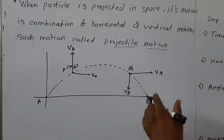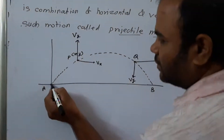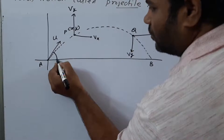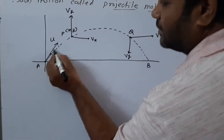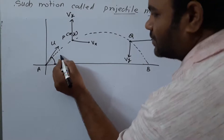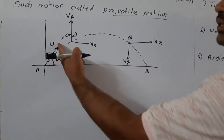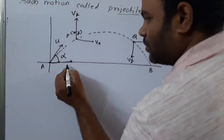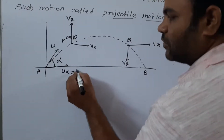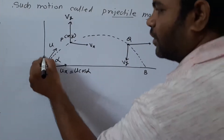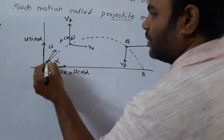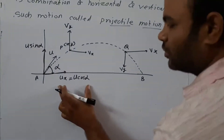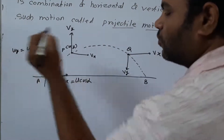That terminology is very important. Consider the initial velocity of the particle as U, and the angle of inclination of that velocity with respect to the horizontal as alpha — alpha is called the angle of projection. When the projectile starts at point A, it has two velocity components: the horizontal component is U cos alpha and the vertical component is U sin alpha. So Ux is the horizontal velocity and Uy is the vertical velocity.